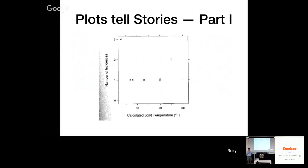Plots tell stories. What are we looking at here? We've got calculated joint temperature in degrees Fahrenheit on the x-axis, scale is 60 degrees, 70, 80. And then we have number of incidents: zero, one, two, three. They've put a scatter plot up. What do we see? What are we looking at here? It looks like basically there's no pattern, right? As you change the temperature you have the same number of incidents, namely one.